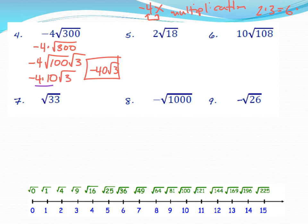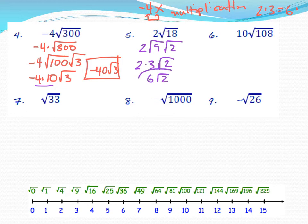Next: 2√18. Keep the 2 on the outside. Split 18 into two factors: 9 and 2. √9 = 3, so multiply: 2 × 3 = 6. Keep the √2. Answer: 6√2.